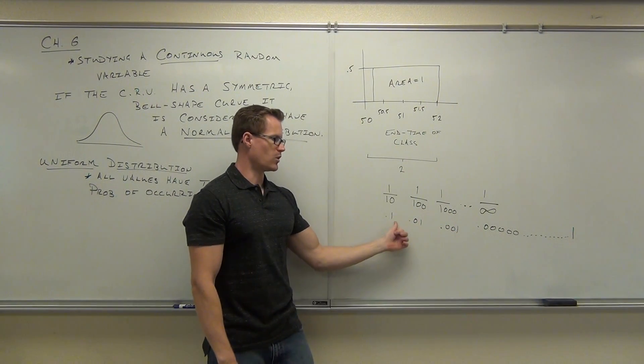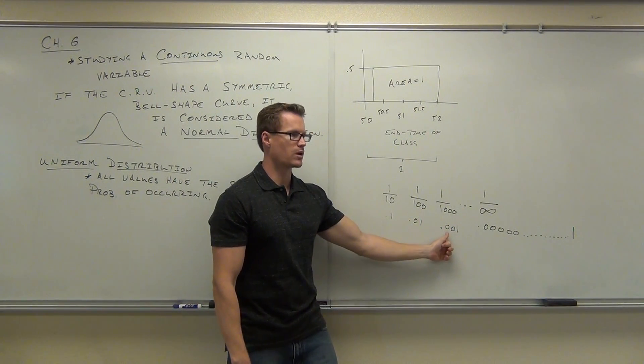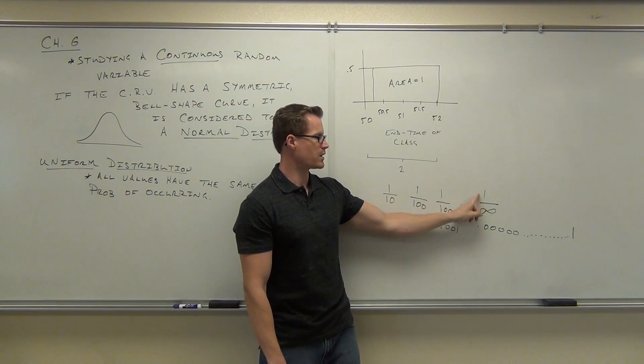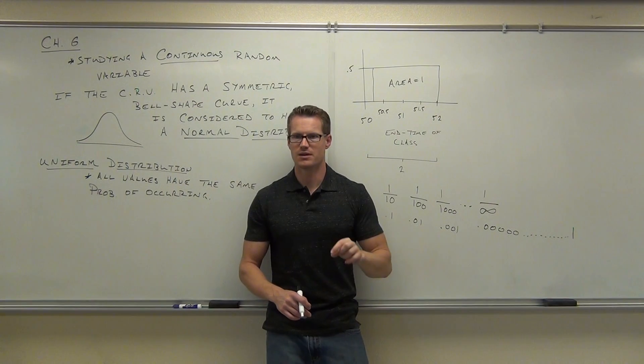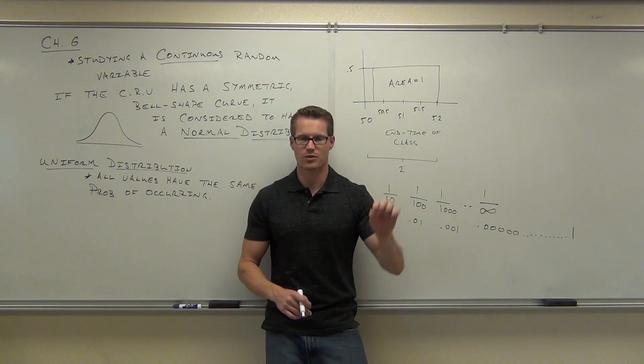This probability is 0.1, 0.01, 0.001. What's the probability I'm going to pick one item out of an infinite number of them? It's like finding a needle in an infinite haystack. Are you going to do it with one guess?